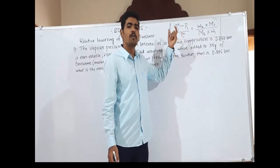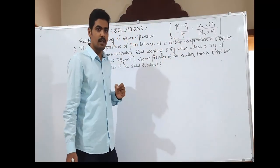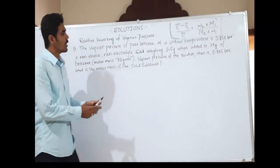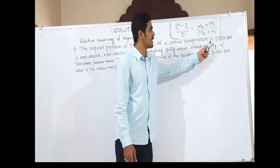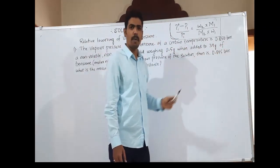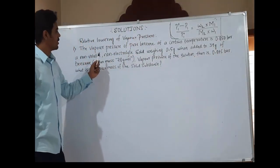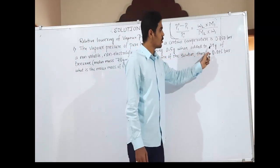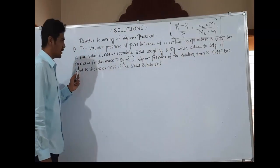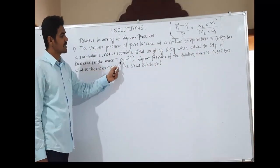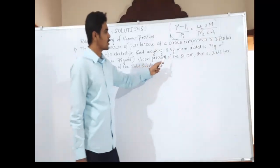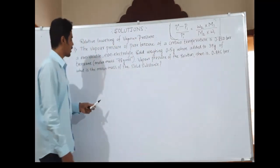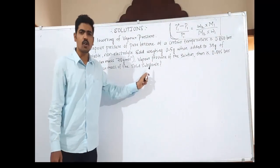The first problem: the vapour pressure of pure benzene at a certain temperature is 0.850 bar. A non-volatile, non-electrolyte solid weighing 0.5 gram, when added to 39 gram of benzene — given that the molar mass of benzene is 78 grams per mole — the vapour pressure of the solution is 0.845 bar. What is the molar mass of the solid substance?